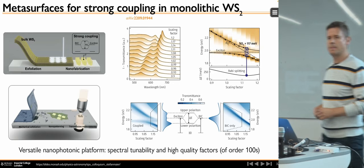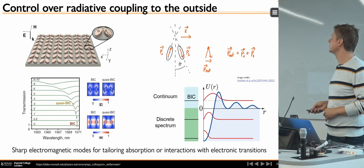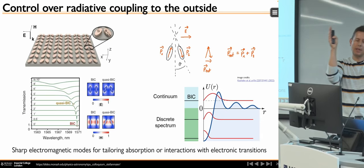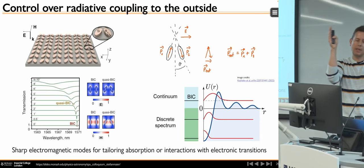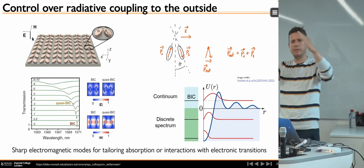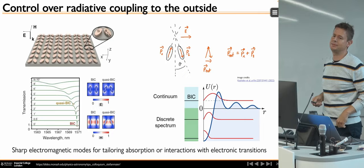Question from Dimitri: how to reconcile the quantum mechanical picture of bound states in the continuum with these photonic structures? Answer: you would say your dark mode doesn't exist in that space; you have a continuum of modes, and changing the slight symmetry — decomposed into a set of Fourier decompositions — leads to a potential such as the one shown. It's complex and worth discussing offline.